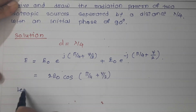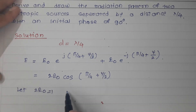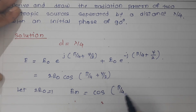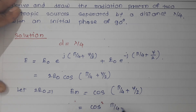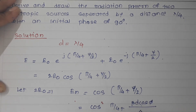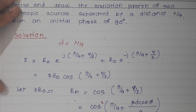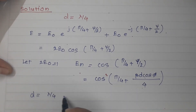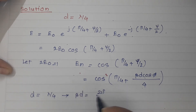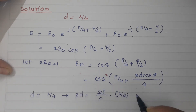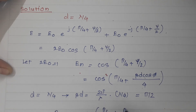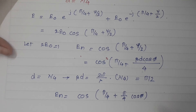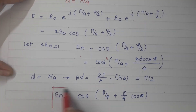Letting 2E₀ = 1, En = cos(π/4 + ψ/2). Substituting ψ = βd·cos(φ), and for d = λ/4, βd = (2π/λ)·(λ/4) = π/2. Therefore the normalized field becomes En = cos(π/4 + (π/4)·cos(φ)).